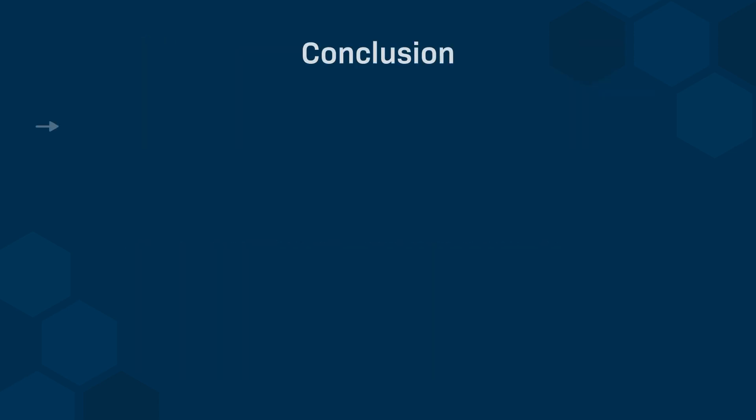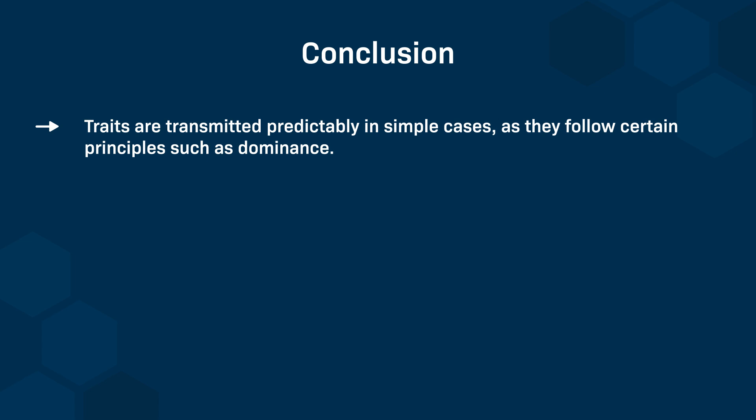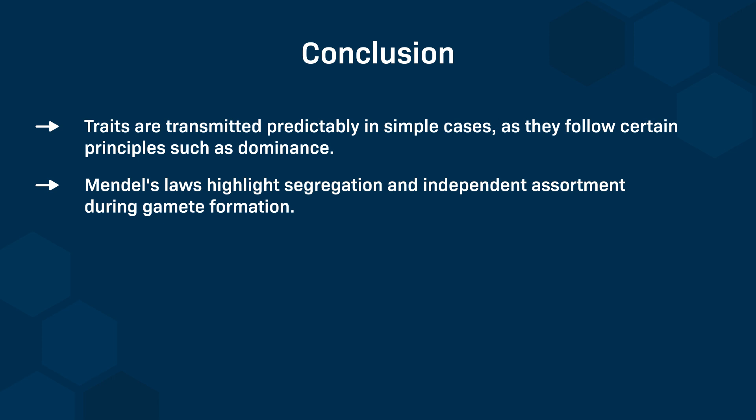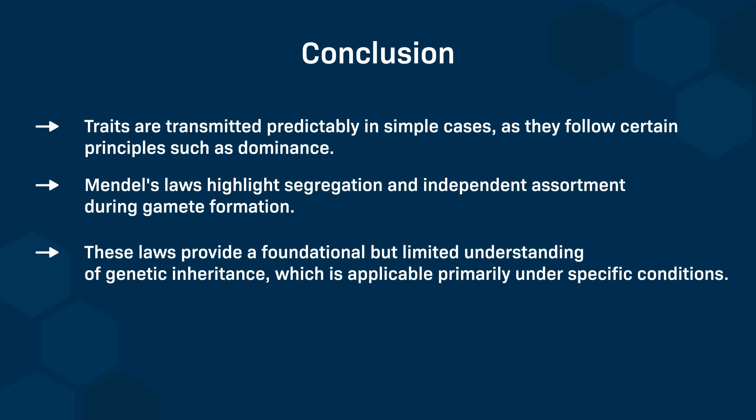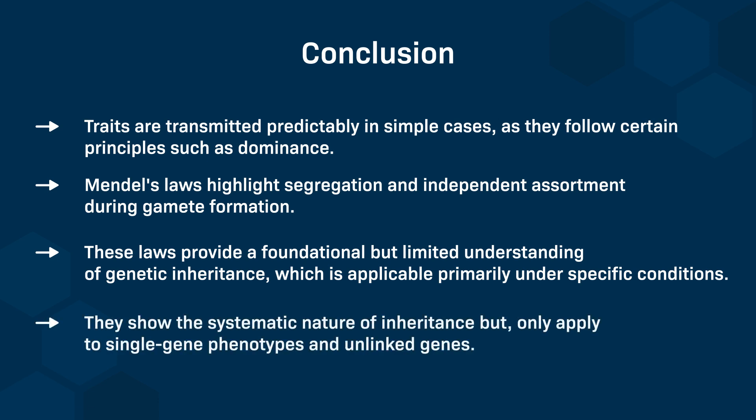In conclusion, traits are transmitted predictably in simple cases, governed by principles such as dominance. Mendel's laws emphasize segregation and independent assortment during gamete formation, providing a foundational but limited understanding of genetic inheritance, primarily applicable under specific conditions. However, they only apply to single gene phenotypes and unlinked genes. Mendel's laws cannot predict phenotypic changes caused by mutations or the inheritance of traits that are controlled by more than one gene.